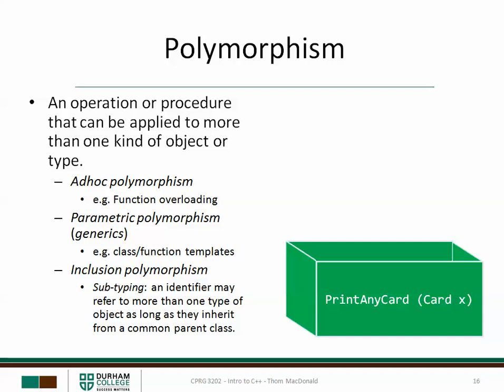Another big idea in object-oriented programming is polymorphism — an operation or procedure that can be applied to more than one kind of object or type. There are different types of polymorphism. The first is ad hoc polymorphism, an example of which is function overloading — having two functions with the same name but different parameters. There's also parametric polymorphism, or generics, which we've used with function templates. The third type is inclusion polymorphism, or subtyping, where an identifier can refer to more than one type of object, as long as that object inherits from a common parent class.